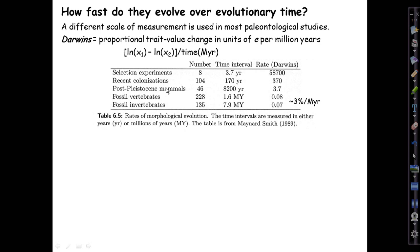Recent colonizations are a little more relevant to understanding evolution in the wild — cases where a species is accidentally released into some place where it doesn't naturally occur. Many of these are moves between continents, for example Asian weeds showing up in North America, or North American animals getting into South America. These are mostly introductions caused by human transport. Here the average rate in darwins was in the hundreds.